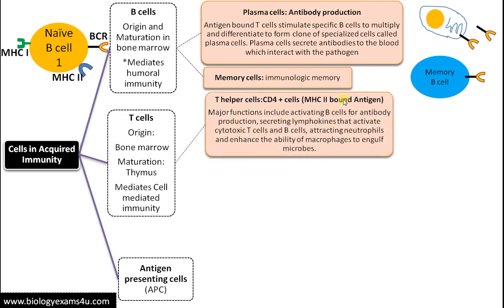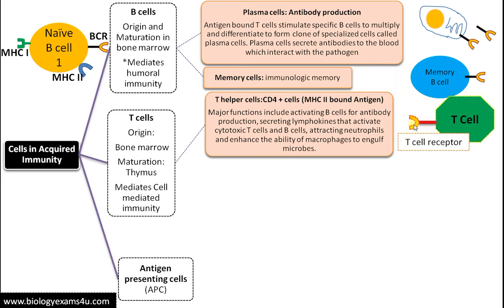The second class of cells is T cells. The first subclass is T helper cells, which have a CD4+ receptor on the cell surface. These can interact only with MHC class 2-bound antigen. T helper cells can be called the commander of the immune system, as they interact with all other cells — activating B cells for antibody production by secreting lymphokines, activating cytotoxic T cells, promoting neutrophils, and enhancing macrophage capacity for phagocytosis.